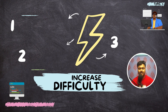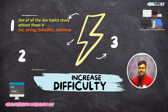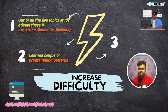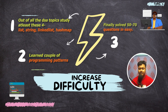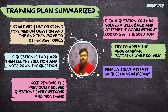You should increase the difficulty only after you have done these three things: studied at least four DSA topics — list, string, linked list, and hash map; learned a couple of programming patterns; and finally solved 50 to 70 easy questions. If you have confidence, then while doing the above steps you can try solving some medium-level questions, but if it feels too overwhelming, don't spend too much time grinding and just solve the easy questions. By the end of doing these steps, you can jump on to medium questions.